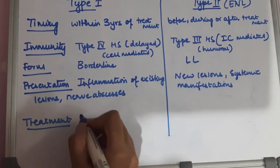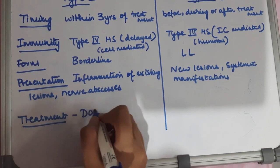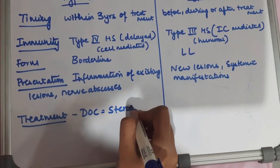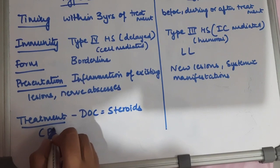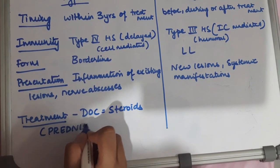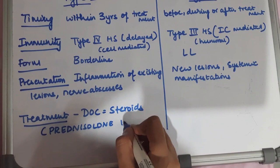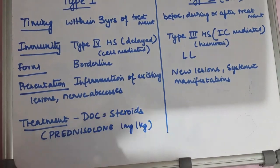For type 1 lepra reactions, the treatment given is steroids. Steroids are the drug of choice, especially prednisolone which is given at a dosage of 1 mg per kg. This is tapered for a period of 12 weeks.